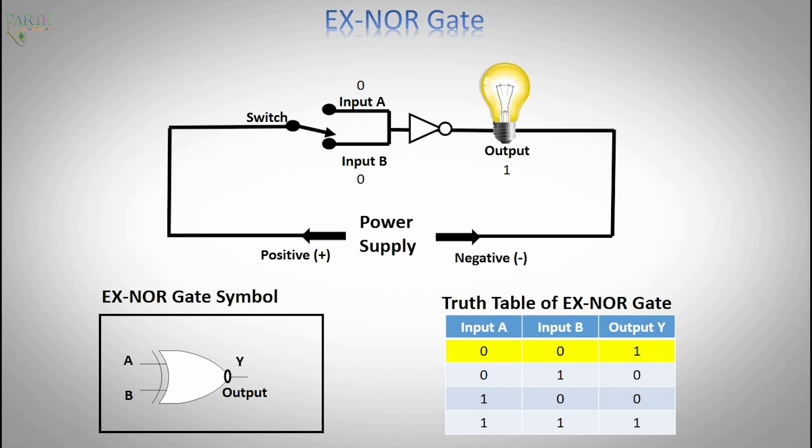Input A 0, input B 0, output is 1 high. Input A 0, input B 1, output is 0 low. Input A 1, input B 0, output is 0 low. Input A 1, input B 1, output is 1 high.